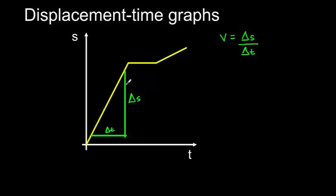By dividing this quantity here by this quantity here, this will give us the gradient of this line, and therefore the velocity.